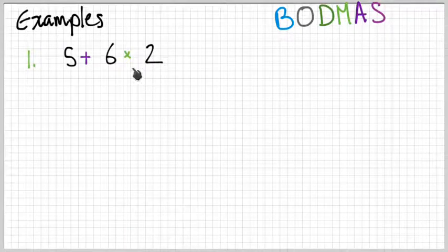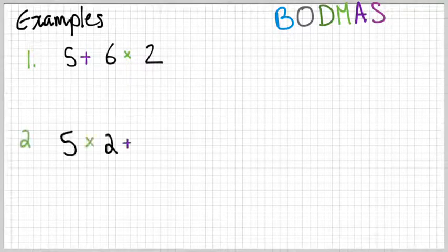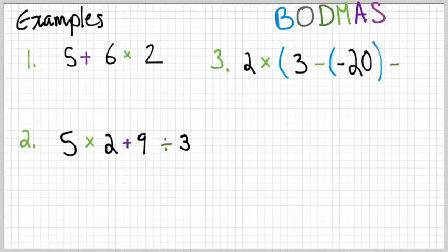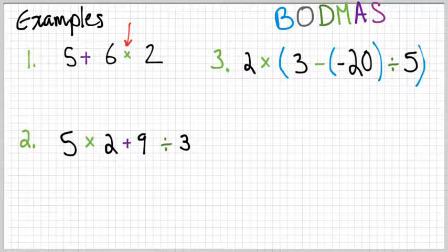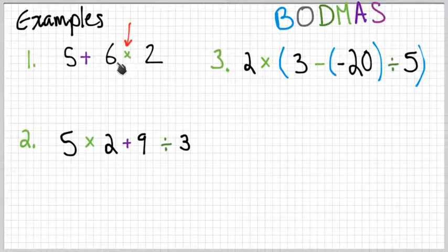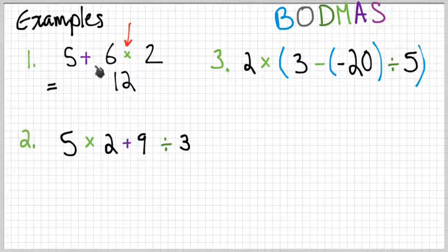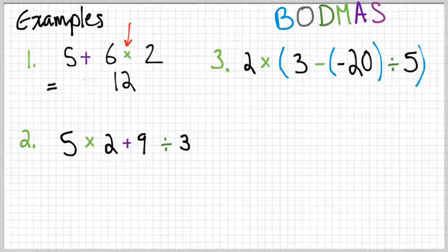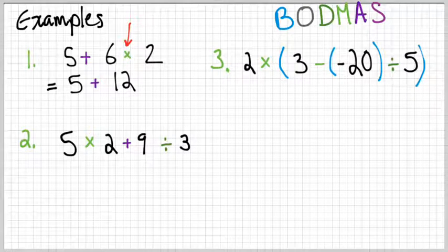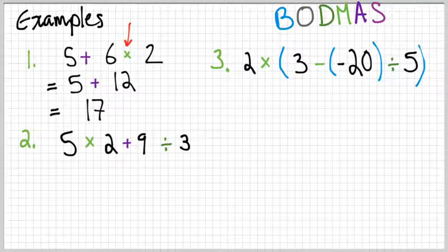So we're going to do this 6 × 2 first. Here's the other problems we're going to do. Multiplication comes first. 6 × 2 is 12. So we write a new line, put an equal sign, and we put our 12. We've used up the 6 and the 2. They both became the 12, but we'll copy everything else down to our new line for the problem. And now the problem is 5 + 12. And of course, 5 + 12 is 17. So that's that problem done.